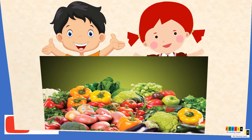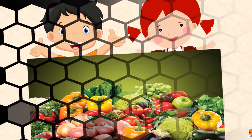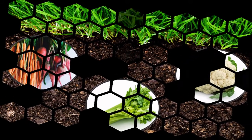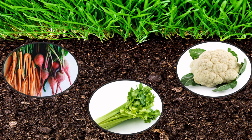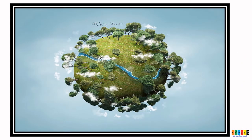We have all gone to a vegetable shop. What do we see there? We see a lot of vegetables with attractive colors. Have you ever thought that do all the vegetables grow under the soil? We get some vegetables from the stem, some from roots, and even some flowers are used for cooking. So we know that vegetables come from different parts of the plant.